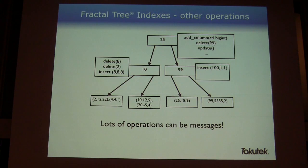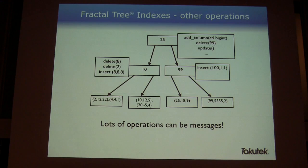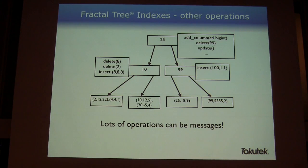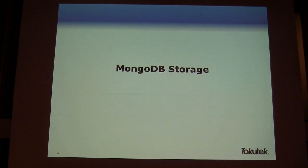Our buffers are different from InnoDB's — we're buffering inserts, deletes, and updates, but there's also a message called add column. In InnoDB, adding a column is a big blocking operation that can take your database offline for quite some time. In a fractal tree, we can just inject a message saying this table wants to add column C4 with a big integer. We just take that as a message and apply it at some later time down to the actual data. If you ask for C4 on any row, we can materialize it without having to do all the work immediately. There are lots of operations that can be messages.